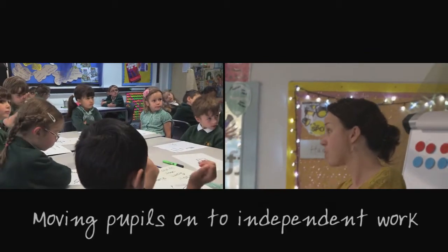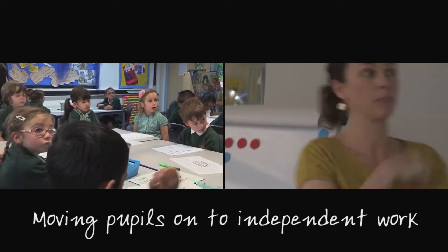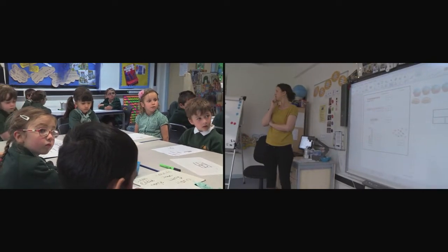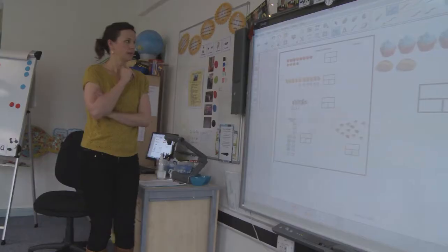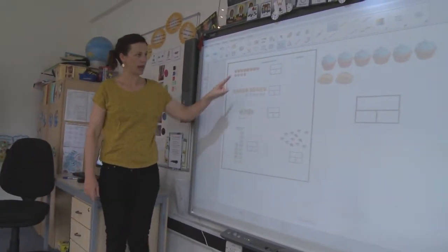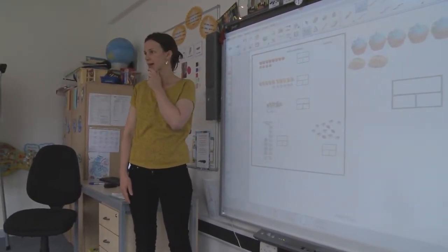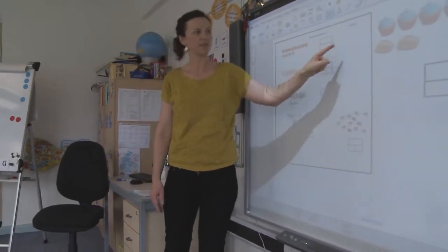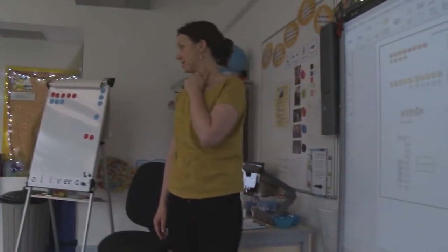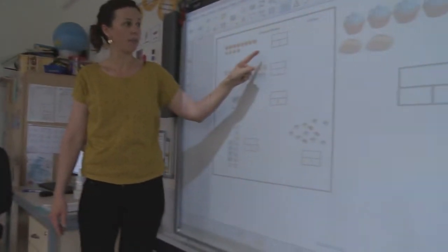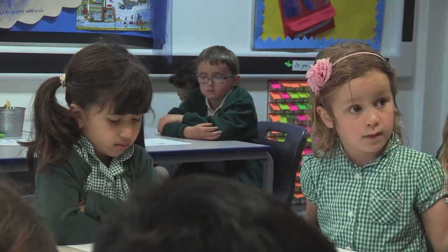We're going to be doing a little bit of written work now, practicing what we've learned about using part, part, whole to show the difference. You've got various pictures and a part, part, whole next to them. On your sheet it says 'the difference is' and you can write in what the difference is. I'd like you to fill in the part, part, whole and write what the difference is.